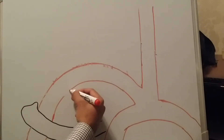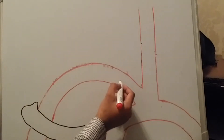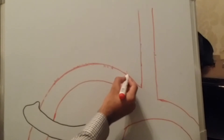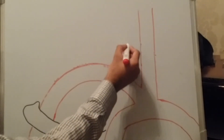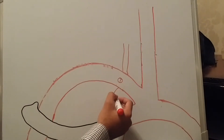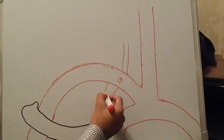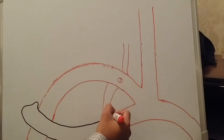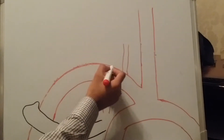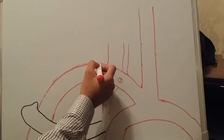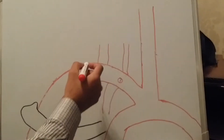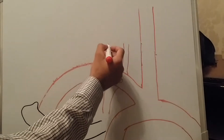This is the subclavian artery. This is the first portion, which gives rise to three branches. Number one is the vertebral artery. Number two, going downward, is the internal thoracic artery. The third branch is the thyrocervical trunk, which gives rise to further branches.